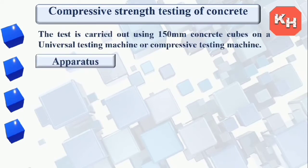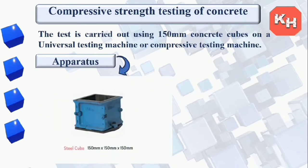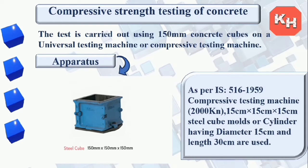The cube test is carried out using 150 mm concrete cubes on a universal testing machine or compressive testing machine. The apparatus required includes a cube mold with internal dimensions 150 × 150 × 150 mm as per Indian Standard 516:1959, a compressive testing machine of 2000 kN capacity, and 15 cm × 15 cm × 15 cm steel cube molds or cylinders of 15 cm diameter and 30 cm length.